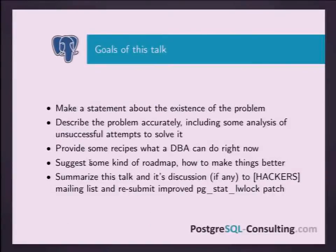The goals of my talk are to explain that the problem exists, then explain what we can already do with this, and suggest some kind of roadmap on how to improve things. Recipes for DBAs will be very brief because we are limited to 45 minutes. I decided to prepare a separate talk with a complete list of recipes to submit to upcoming conferences. The final purpose is to summarize all this information in one place and submit to hackers to make things better.